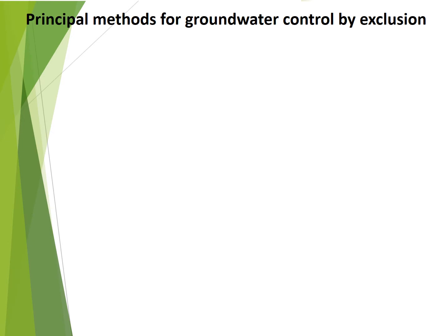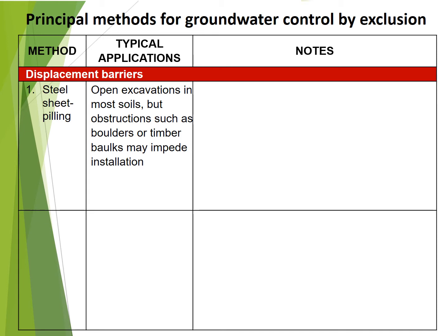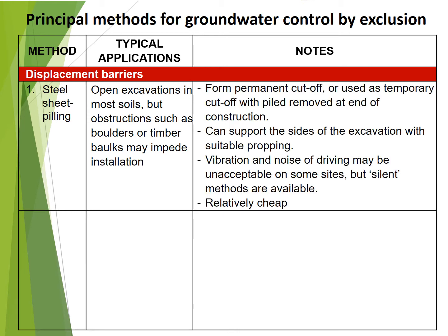Principal methods for groundwater control by exclusion. A) Displacement barriers. 1. Steel sheet piling: used for open excavations in most soils, but obstructions such as boulders or timber may impede installation. Can form a permanent cutoff or be used as a temporary cutoff with piles removed at end of construction. Can support the sides of the excavation with suitable propping. Vibration and noise of driving may be unacceptable on some sites, but silent methods are available. Relatively cheap.